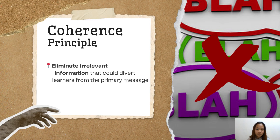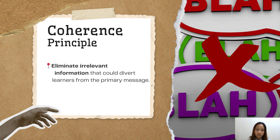Next is the Coherence Principle. It states: eliminate irrelevant information that could divert learners from the primary message. The Coherence Principle is a straightforward concept — it is ideal to focus on the essentials of a subject while learning new material and avoid becoming overwhelmed by unhelpful extras. The first principle says we can use multiple elements at once, but it doesn't stop there. We also have to follow other principles, most importantly this Coherence Principle.